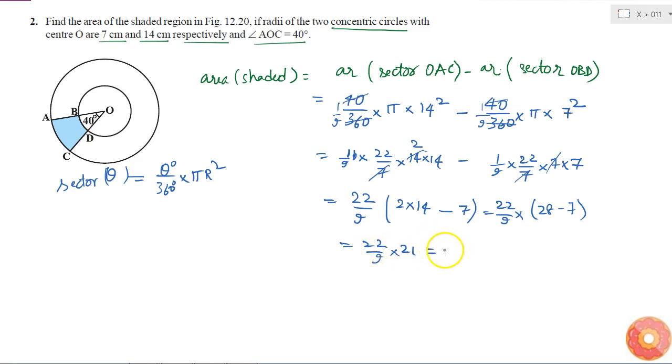I know 22 into 21 will be 462 divided by 9, which will be equal to 51.33. This is the area of the shaded region in centimeter square, because all the units are in centimeters, so the area is in centimeter square.